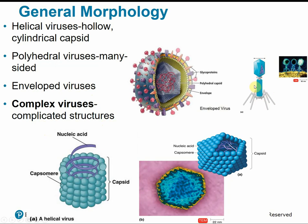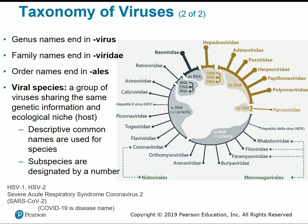Viruses were once classified based on symptoms, but new DNA technology has allowed for more accurate grouping. Generally, the genus name will end in 'virus' and the family name will end in 'viridae.' A viral species is a group of viruses that share the same genetic information and the same host range or ecological niche. Unlike plants and animals, viruses use descriptive common names rather than formal species names, and subspecies or strains are designated by a number.